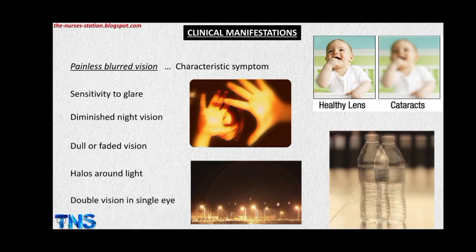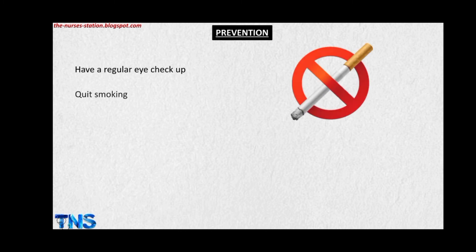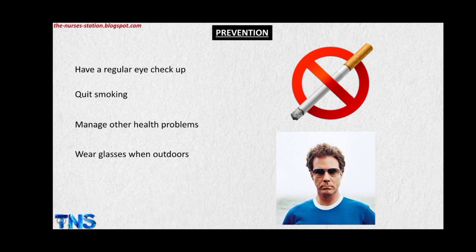Other symptoms include halos around lights and double vision in a single eye. To prevent the development of cataract, you must have regular checkups with an ophthalmologist, quit smoking if applicable, and manage other health problems such as diabetes mellitus. Wear glasses when outdoors, because sunlight directly falling on the eye can damage lens proteins. Also stop alcohol consumption.